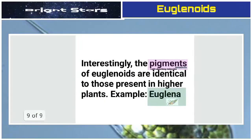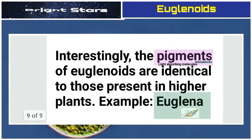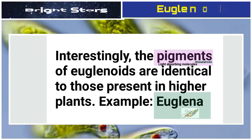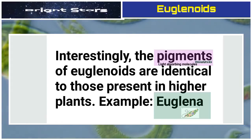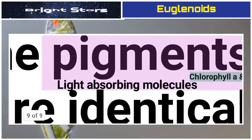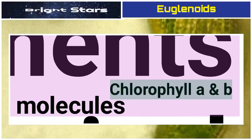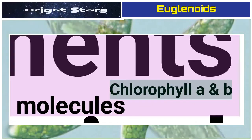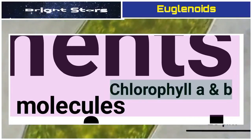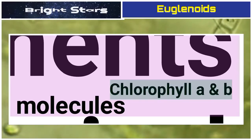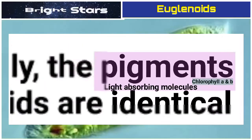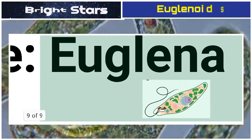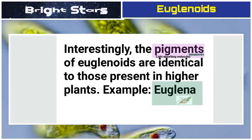Interestingly, the pigments of euglenoids are identical to those present in higher plants. Pigment means a light-absorbing molecule. Two important pigments are chlorophyll a and chlorophyll b, which are present in higher green plants. The same pigments are found in euglenoids, meaning euglenoids show features of both plants and animals — they exhibit mixotrophy. The most important example among euglenoids is Euglena.